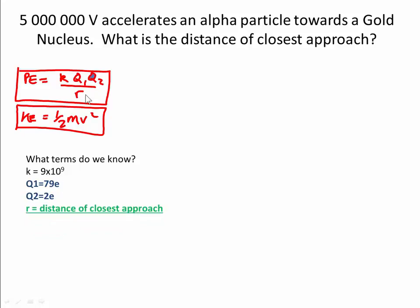R is the distance of closest approach. The kinetic energy is basically lost and that's what's turned into potential energy.